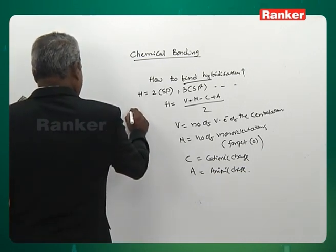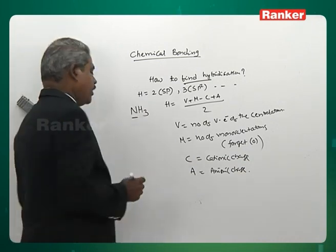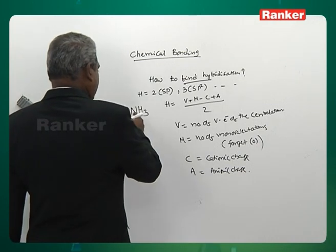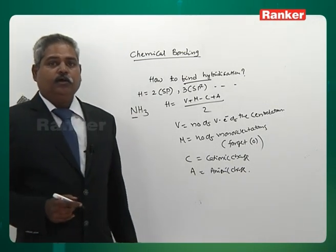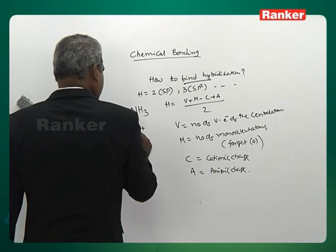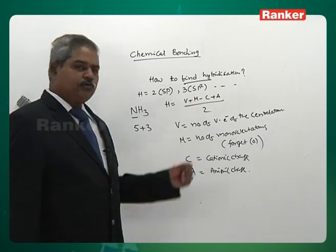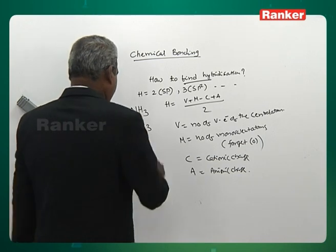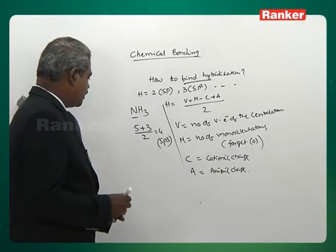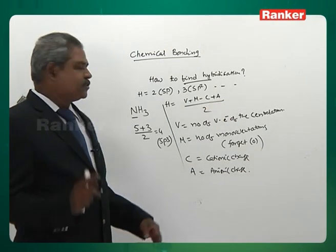Apply this formula for NH3: nitrogen belongs to the fifth group, so V = 5. Three hydrogens are monovalent (M = 3). No charge. So H = (5 + 3) / 2 = 4. Hybridization is sp3. Though the formula appears large, the application is very simple: just 5 plus 3 divided by 2.